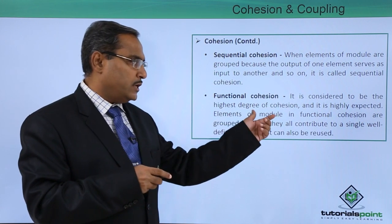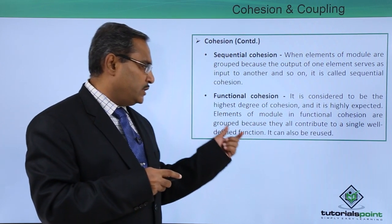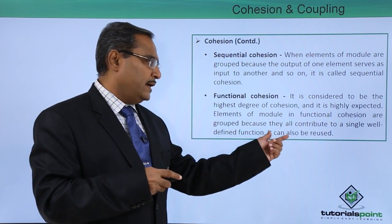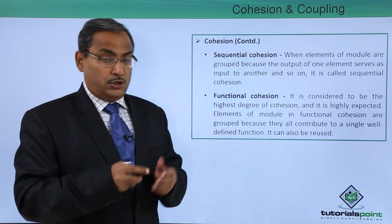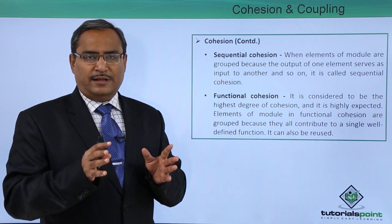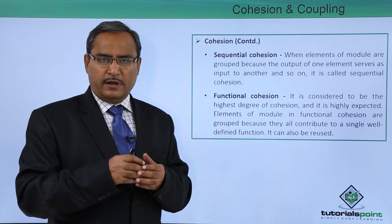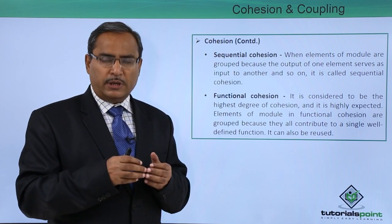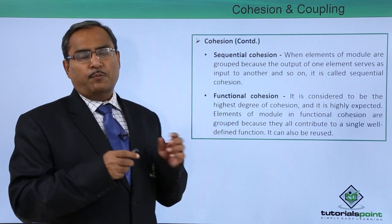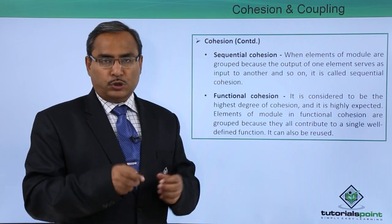The last cohesion type is functional cohesion, which is considered the highest degree of cohesion and is highly expected. Elements of a module in functional cohesion are grouped because they all contribute to a single well-defined function, so it can be reused again and again. If a module is dedicated to executing one function of the software, it has functional cohesion, and it is highly expected that modules should have functional cohesion.